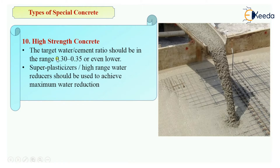To lower the water-cement ratio, we use superplasticizers or high-range water reducers. These are the admixtures we use so that the concrete can be worked with even at a low water-cement ratio. Superplasticizers and high-range water reducers are used to achieve maximum strength with minimum water-cement ratio, giving maximum water reduction while also gaining strength simultaneously.